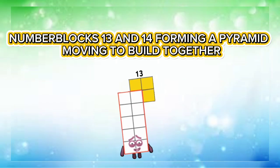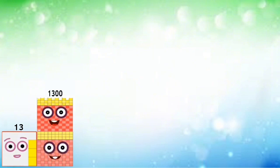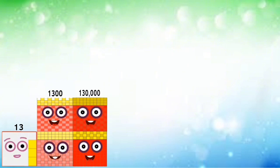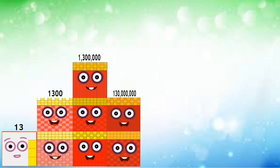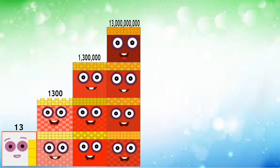Number blocks 13 and 14 forming a pyramid, moving to build together. 13. 130. 1,300. 13,000. 130,000. 1,300,000. 13,000,000. 130,000,000. 1,300,000,000.